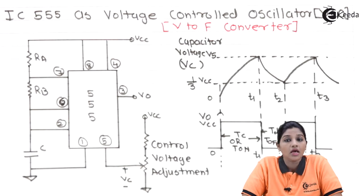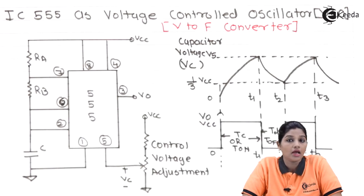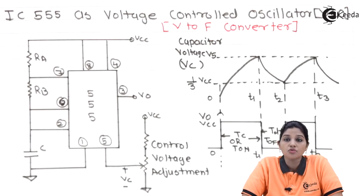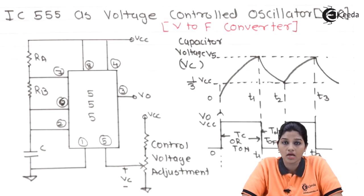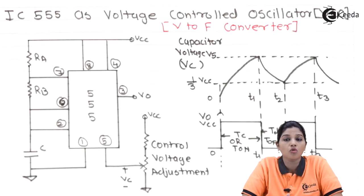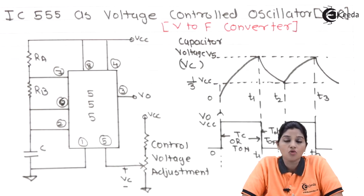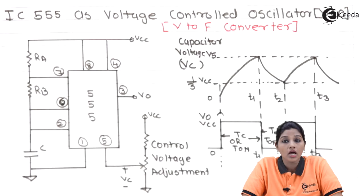In this video we are going to see how we can use an astable multivibrator as a voltage control oscillator. The normal circuit of an astable multivibrator consists of three external components: resistor RA, resistor RB, and capacitor C. When the voltage across the capacitor equals 0, which is less than one-third Vcc, the internal lower comparator output goes high. This causes resetting of the SR flip-flop, the output of the timer goes high, and charging of the capacitor takes place through resistors RA and RB as the transistor is off and acts as an open switch.